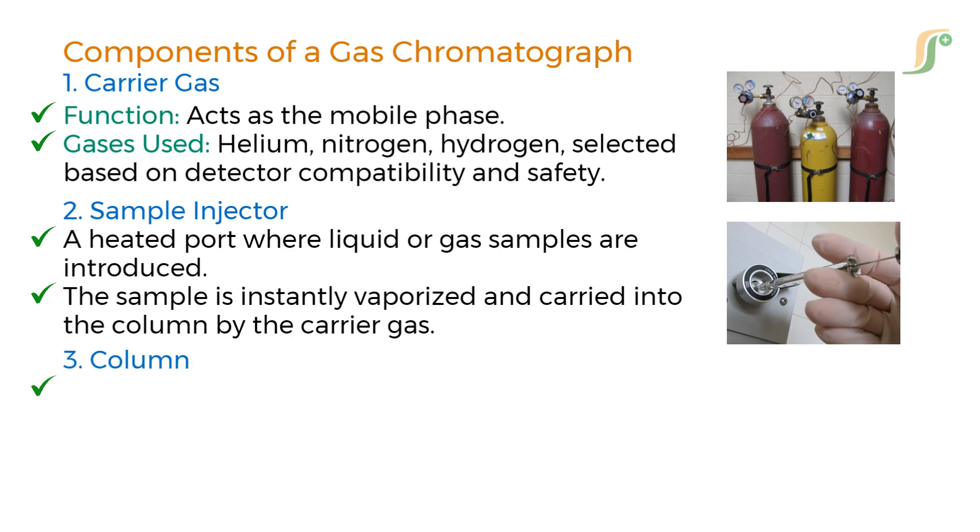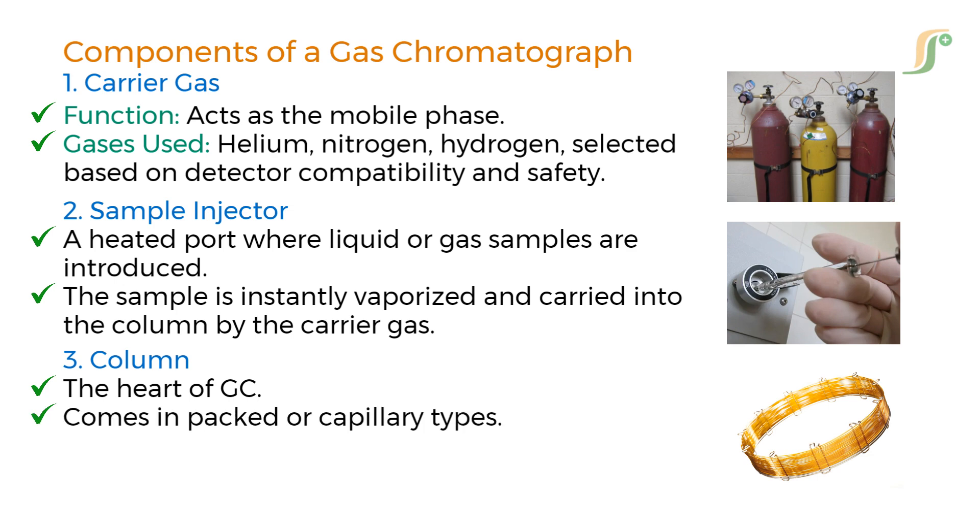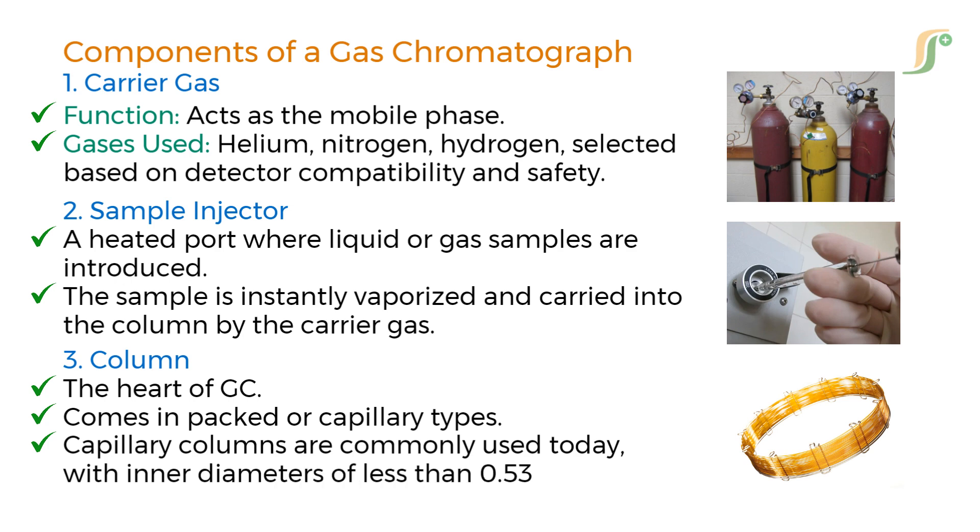Third is column. Column is the heart of GC. It comes in packed or capillary types. Capillary columns are commonly used today with inner diameters of less than 0.53 millimeters. Columns are coated with a stationary phase tailored to your sample type.